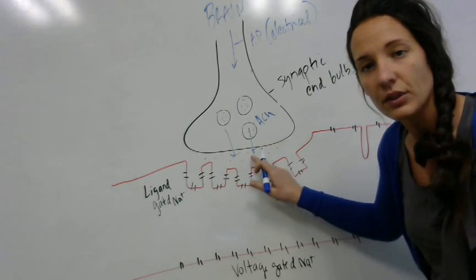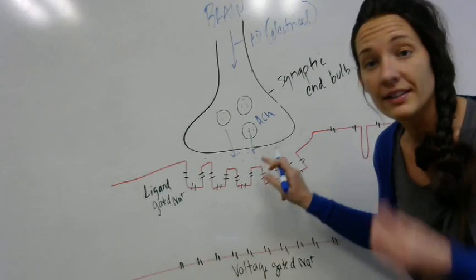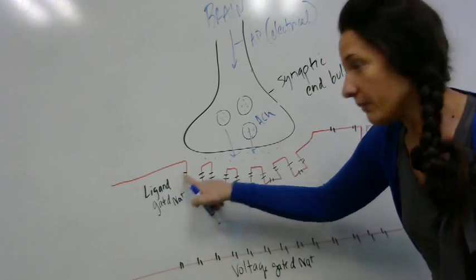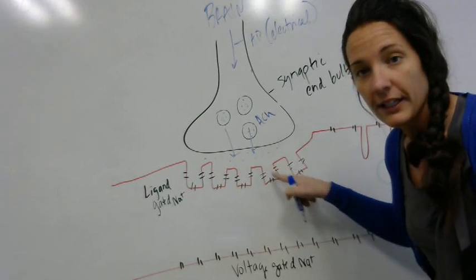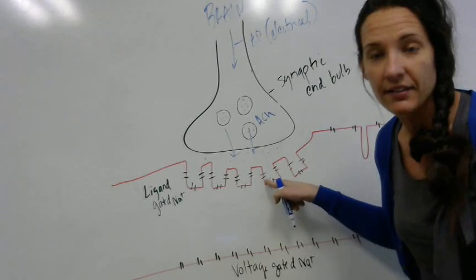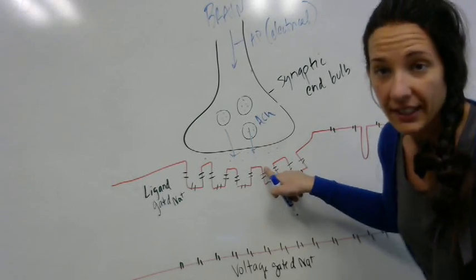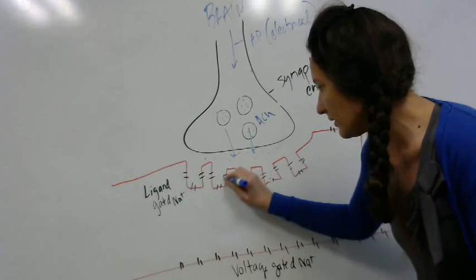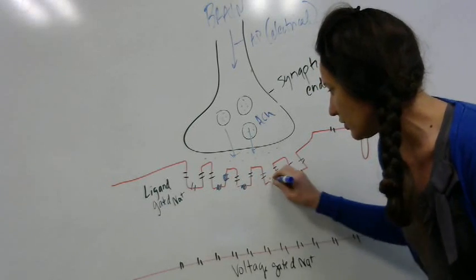Once I dump this acetylcholine into this cleft, that acetylcholine wants to bind because it has an affinity for these ligand-gated sodium channels. This is the motor end plate, the beginning area of the muscle that comes in contact with the neuron. This activation area contains ligand-gated sodium channels.